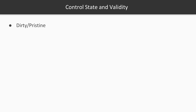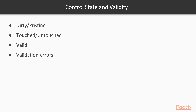Such as dirty or pristine, where those define whether the field value has been changed or not — dirty if the value has been changed and pristine if not. The other information is touched and untouched, which defines whether the field input has been visited. And then there is valid, and the error generated for this specific value in case of invalidation.